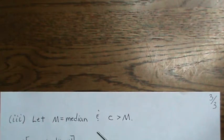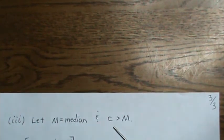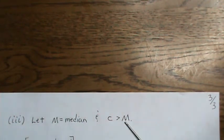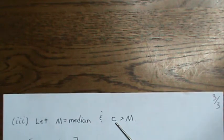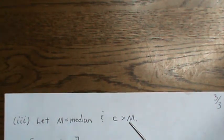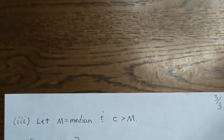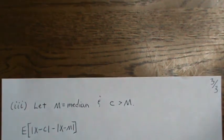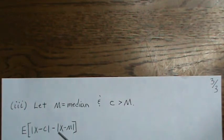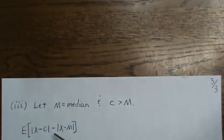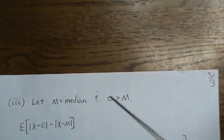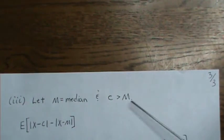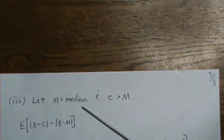Proof three requires no calculus — well, unless you count the expected value. Without loss of generality, we assume m, the median, is less than c. To be a complete proof we'd also need to do it the other way, that m is greater than c, but the proof is analogous. We look at this expectation of two absolute values. We want to get rid of the absolute values, and that depends on whether the x's are less than m, between m and c, or greater than c. So we have to break it into pieces.